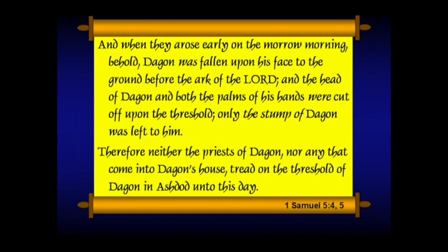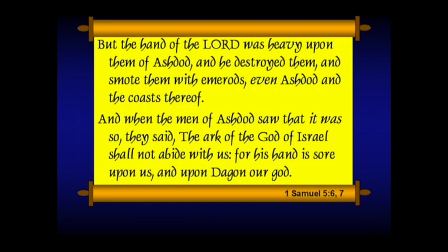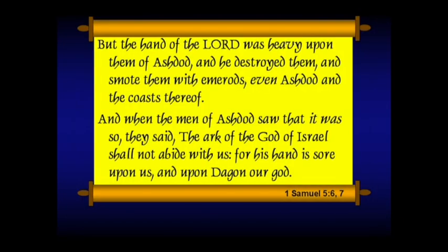Therefore, neither the priests of Dagon nor any that came to Dagon's house tread on the threshold of Dagon in Ashdod unto this day — they had a practice of not stepping on the threshold from this. But the hand of the Lord was heavy upon them of Ashdod and he destroyed them with several plagues, one expressly mentioned: he smote them with hemorrhoids — that's what 'emeralds' refers to in the Hebrew. And when the men of Ashdod saw it was so, they said, 'The ark of the God of Israel shall not abide with us, for his hand is sore upon us and upon Dagon our God.' They therefore gathered all the lords of the Philistines and said, 'What shall we do with the ark of the God of Israel?' They answered, let the ark of God of Israel be carried about unto Gath.